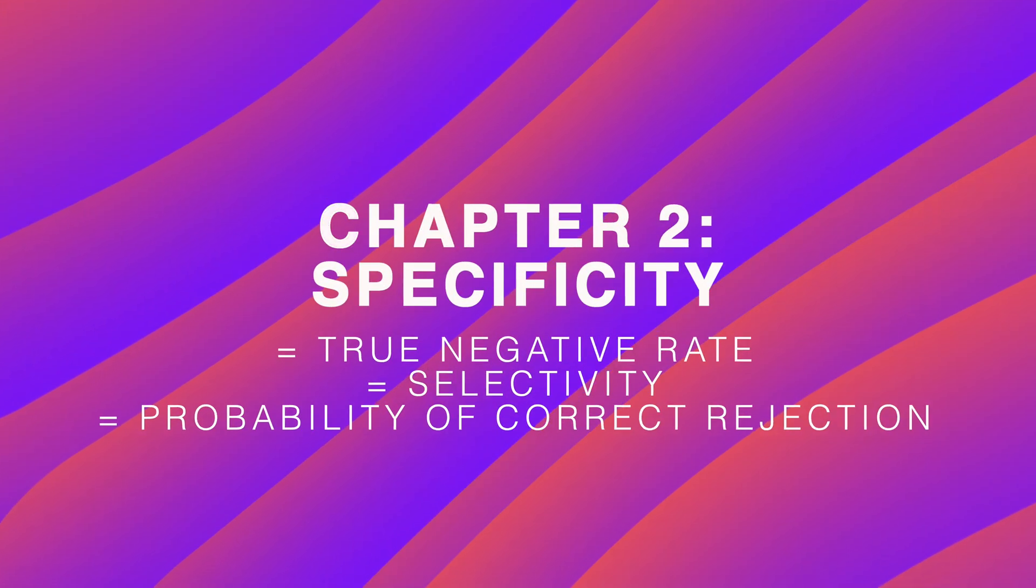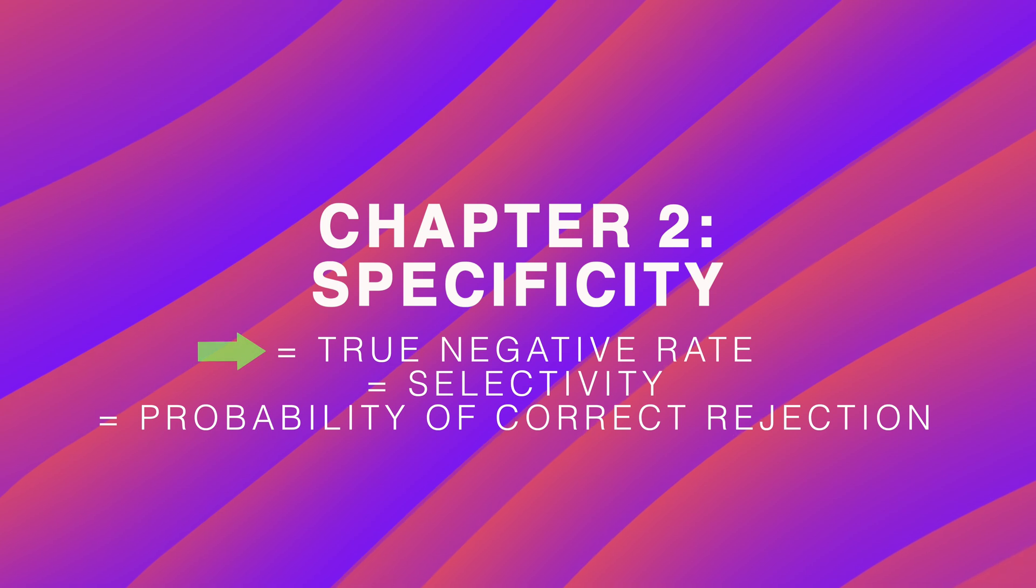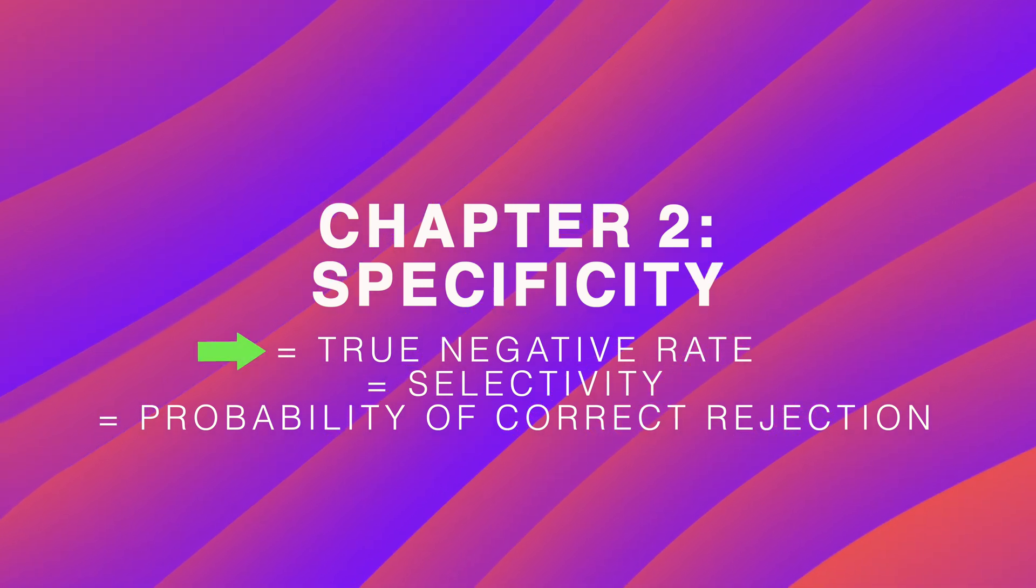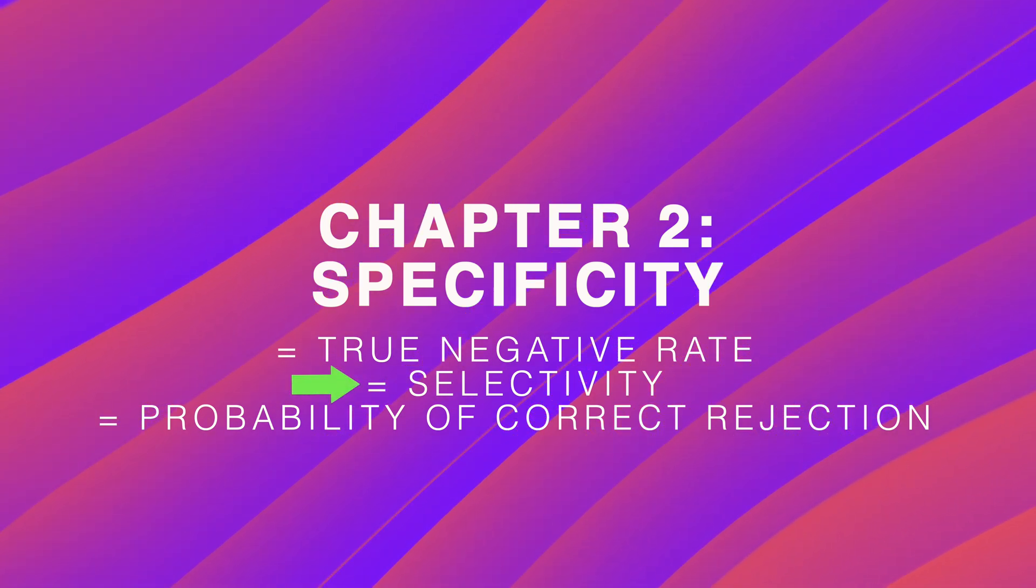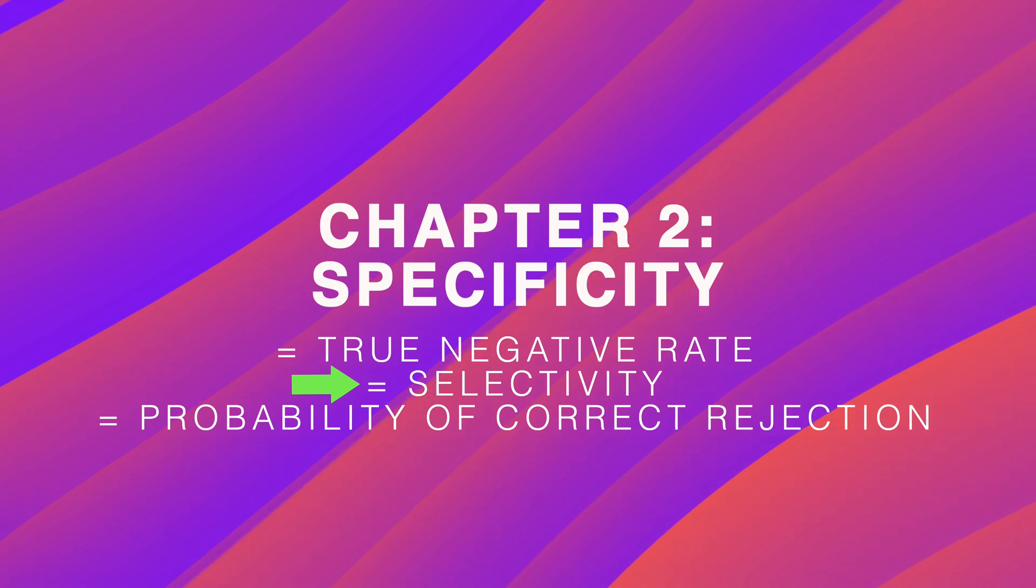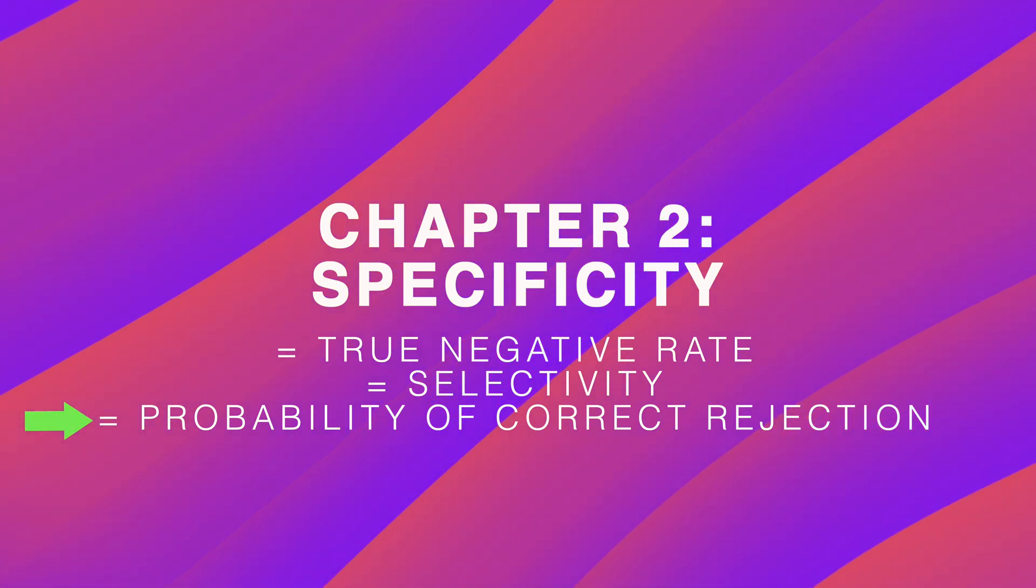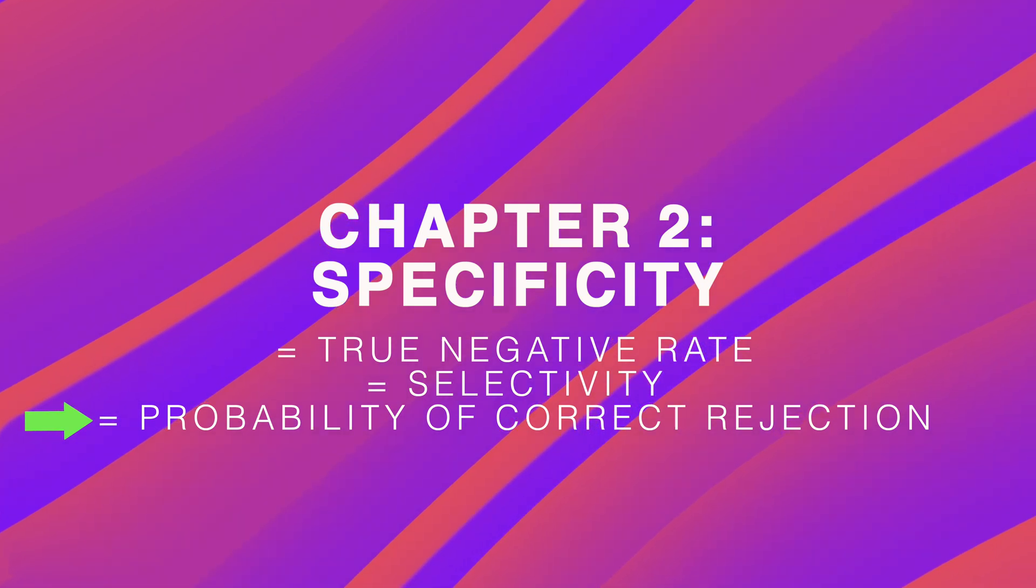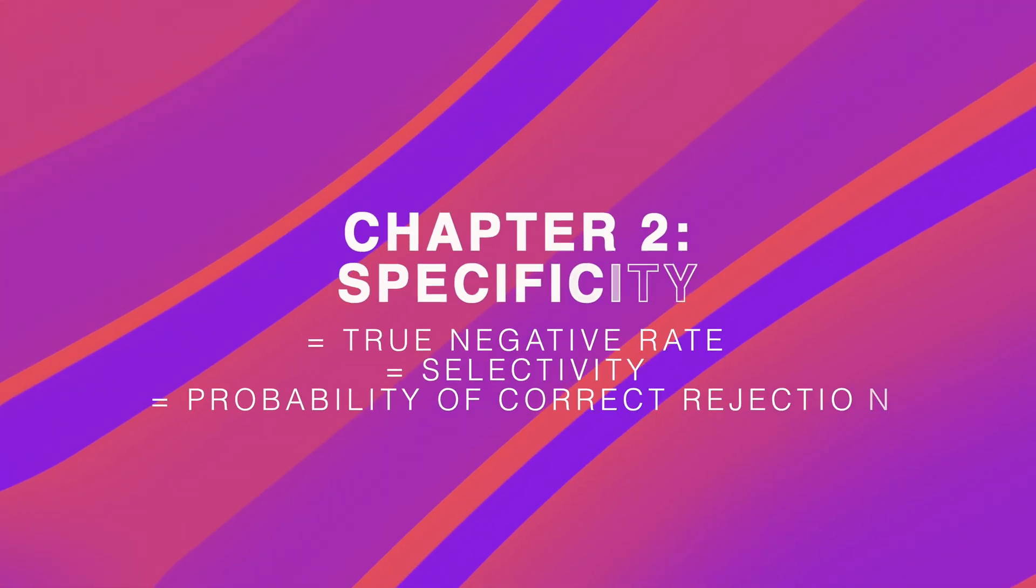Unfortunately, specificity also goes by many names. In medicine, it's called the true negative rate. In machine learning, it's sometimes referred to as selectivity. In engineering, some call it probability of correct rejection, a term I personally find particularly intuitive.